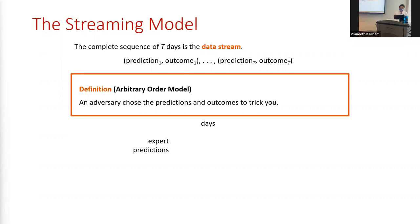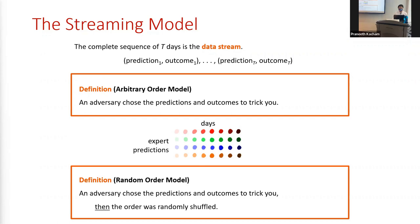More generally, we'll have a random order model, where an adversary chooses the predictions and outcomes to trick you, but then the order is randomly shuffled. When outcomes are shuffled, so are the corresponding expert predictions.